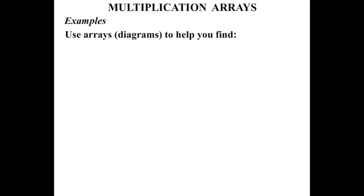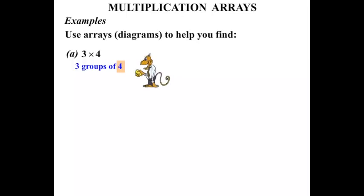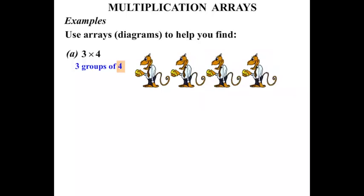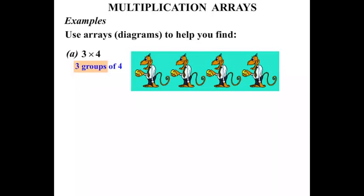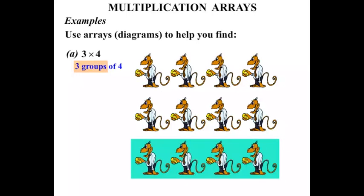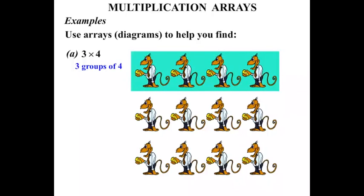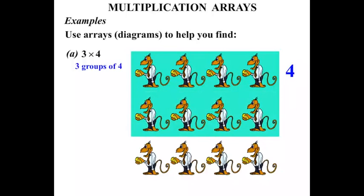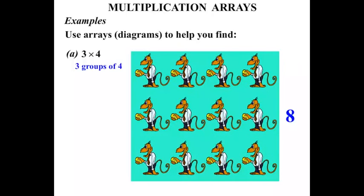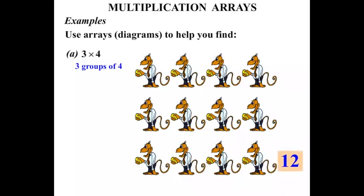Examples. Use arrays or diagrams to help you find, in Part A, three times four. Now three times four means three groups of four — three lots of four. So let's think of four monkeys: one, two, three, four monkeys there. That's our one group, and we want three groups. So we've got one group, a second group, and a third group — we now have three groups. Let's count them. We've got four, another four makes eight, another four makes twelve. So three times four, or three lots of four, equals twelve.